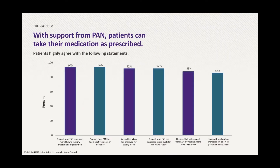For many patients with chronic, rare, or life-threatening diseases, the cost of care can add up quickly. In 2020, Chagall Research conducted a survey to assess patient satisfaction with PAN's services. After receiving assistance, an estimated 94% of patients responded that support from PAN made them more likely to take their medications as prescribed and had a positive impact on their families. Also, 92% reported that PAN's support improved their quality of life and decreased stress for the whole family.